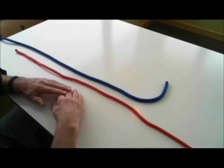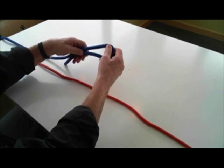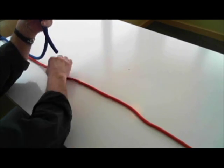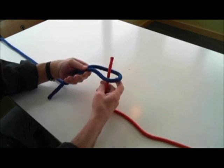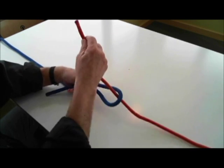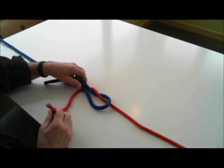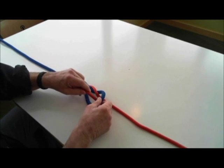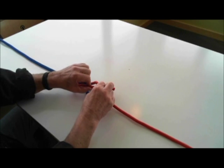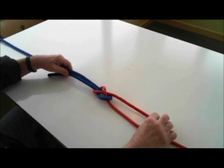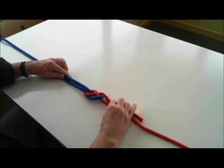To tie a sheet bend, we have a bite. The rabbit comes out of the hole, goes around the back of the tree, and instead of going back down the hole, we go under the log. We now have a bite and a trap called the sheet bend.